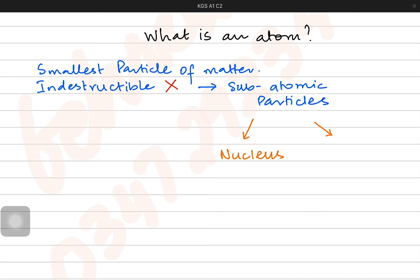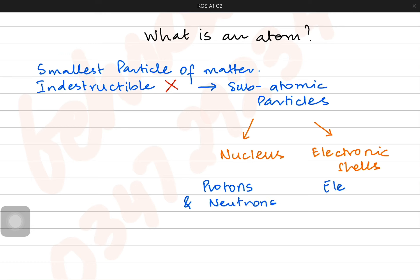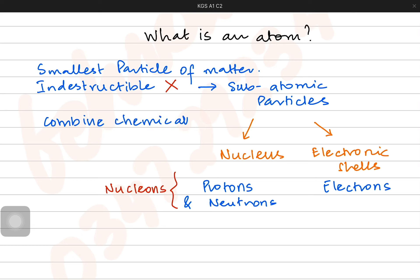Within each atom there is a nucleus present at the center, and another thing is known as the electronic shells, or we can also call them energy levels. Within the nucleus there are two sub-atomic particles known as protons and neutrons. The electronic shells consist of electrons. Protons and neutrons are present inside the nucleus, which is why we also call these particles nucleons — because the nucleus is the place where they reside.